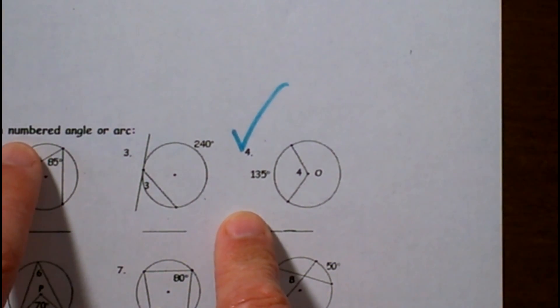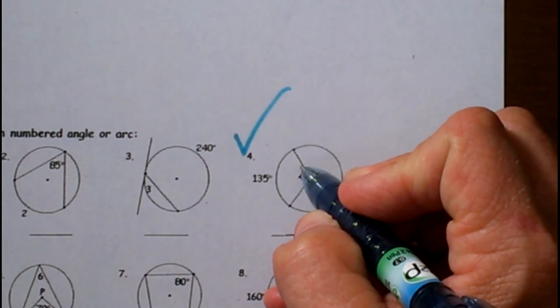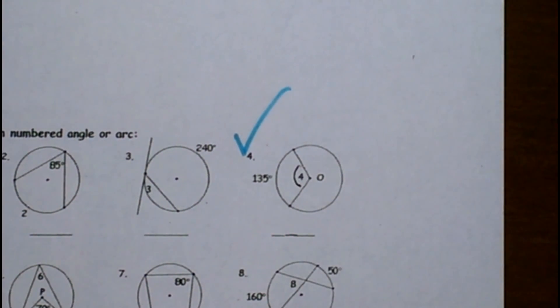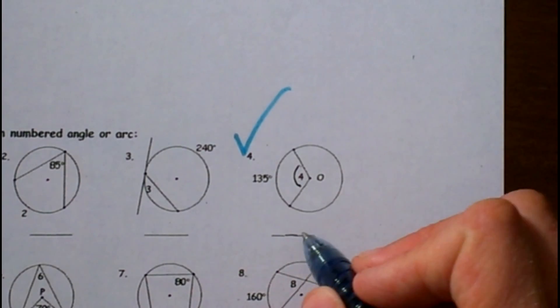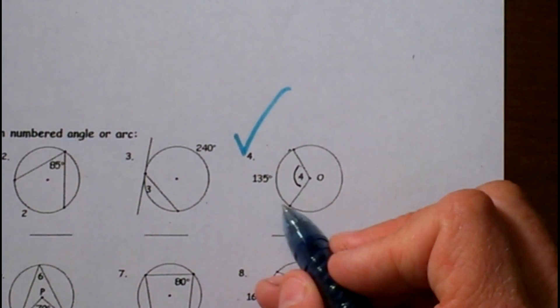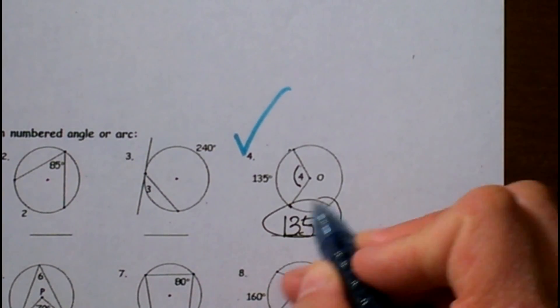We're finding the measure of each angle or arc, the one that's asked for. In this case, number 4, we are looking for an angle. That angle is a central angle. What do we know about an arc and its central angle? They are the same measure. So if the intercepted arc is 135, then that angle must also be 135.